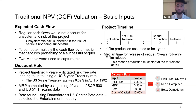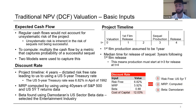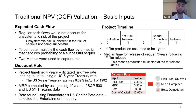Starting off with our traditional NPV or DCF valuation, we wanted to outline our basic inputs first. For expected cash flows, we wanted to incorporate the unsystematic risk of the actual project by finding a probability metric for the probability of success of a sequel, which we multiplied the cash flows by — essentially dividing unsystematic and systematic risk into our cash flows and discount rates respectively. We used two models to calculate the probability metric, as sensitivity analysis revealed the expected cash flow was the input NPV was most sensitive to, making it paramount to maximizing shareholder value.